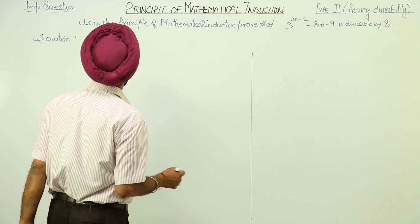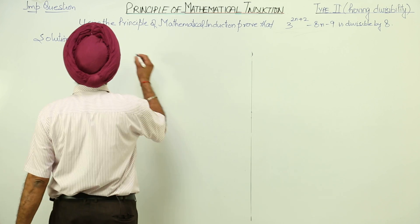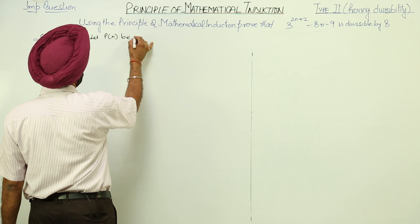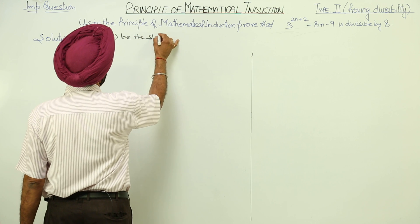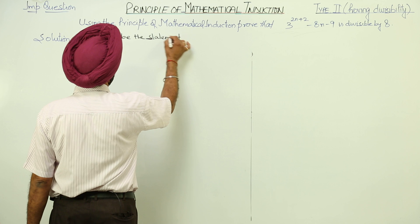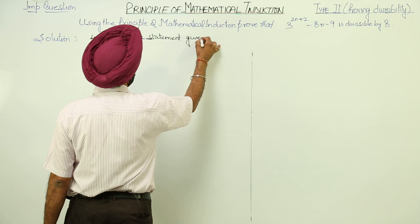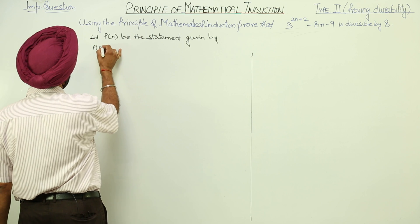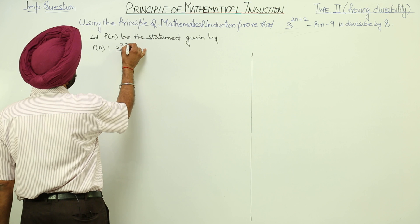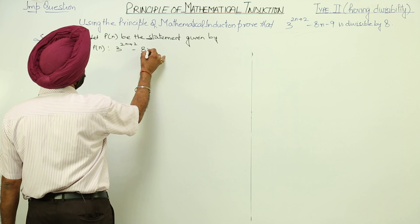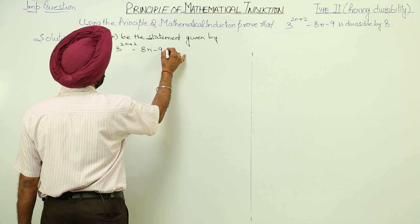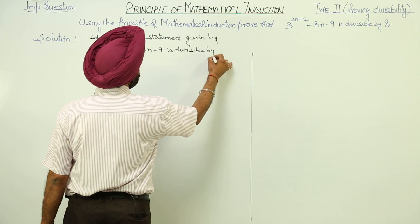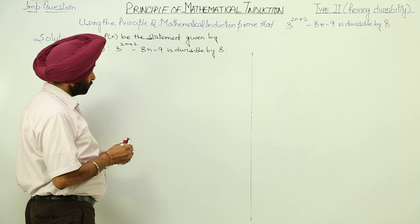Important question — we have to prove by induction. Let P(n) be the statement given by 3 raised to the power (2n + 2) minus 8n minus 9 is divisible by 8.